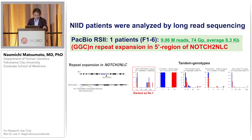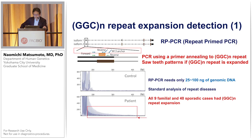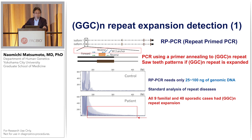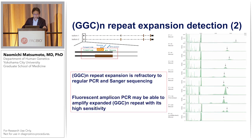We were very happy about this. We designed repeat-primed PCR to detect this repeat expansion. Our repeat-primed PCR could detect the characteristic stutter patterns in that family, as well as the other eight families and 40 sporadic cases. We also developed an amplicon-length repeat expansion detection system — using fluorescent-labeled forward and reverse primers spanning the repeat expansion. The expanded region can be clearly seen in the right image of this slide.